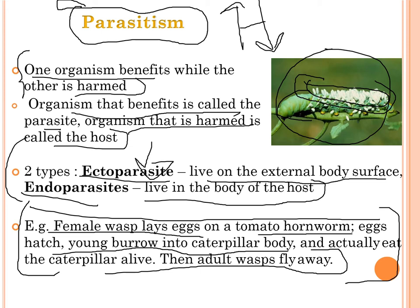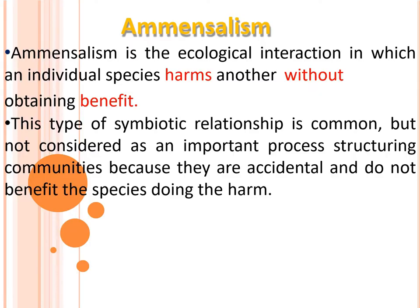In this example, the host that is harmed is the caterpillar, and the parasite is the wasp, which lays eggs on the tomato hornworm. The caterpillars are eaten alive by the hatched wasps. This is the parasitism example.